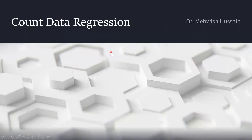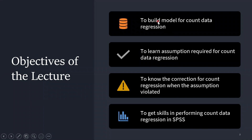In this video we are going to work on how to model count data. Count data deals with any count integer, like number of hospital visits per year or number of family members. This lecture will be covered across two videos. The first video covers the most commonly used model for count data regression, its required assumption, and how to detect it. The second video covers how to correct the data when the assumption is violated. In both videos, we will learn how to perform count data regression in SPSS.